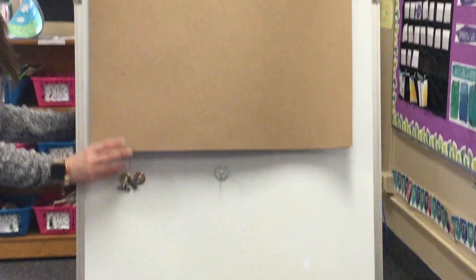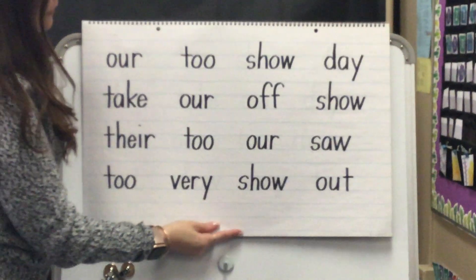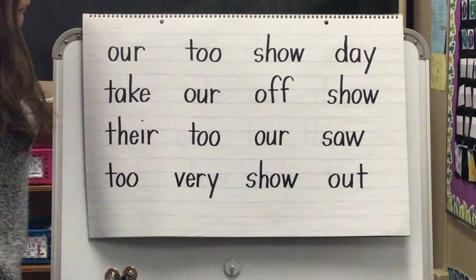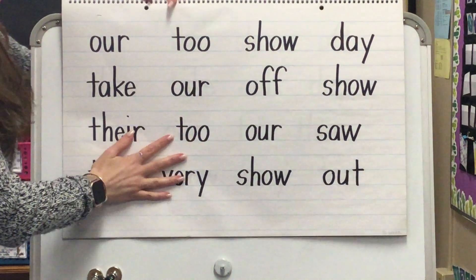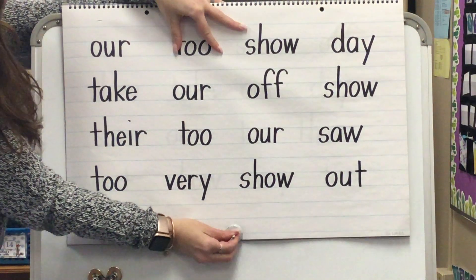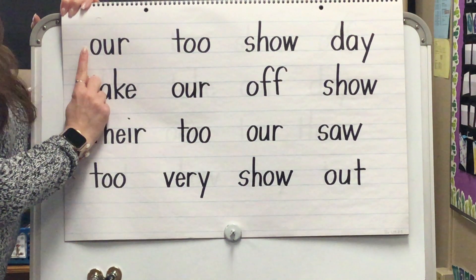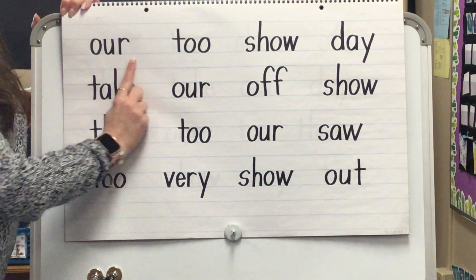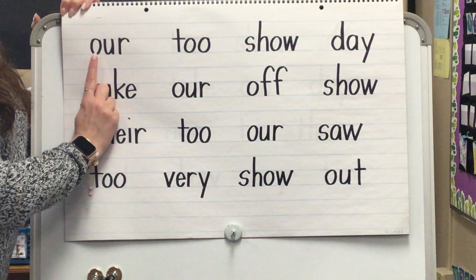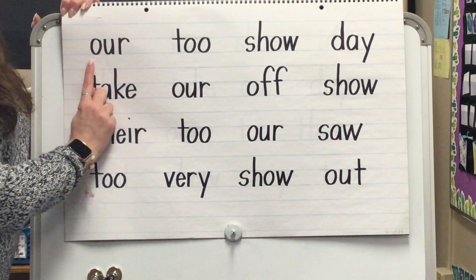Now you're going to practice reading words. First we'll read and spell the new words, then you will read the rest of the words. This is the word: our. What word? Our. Spell our. O-U-R. What word? Our.